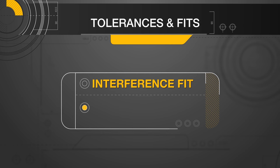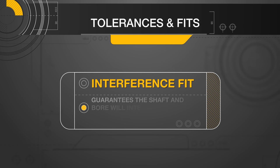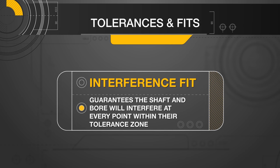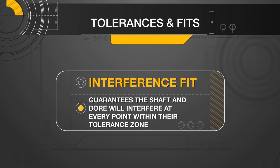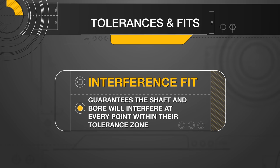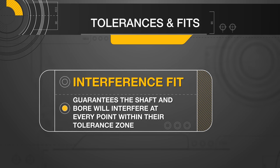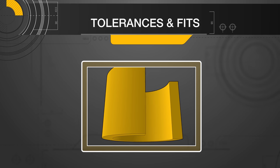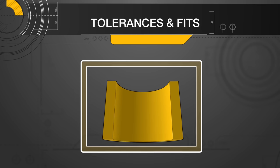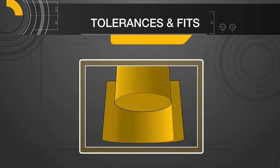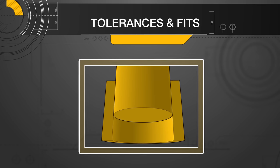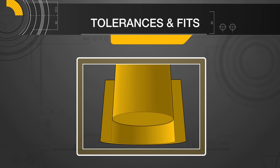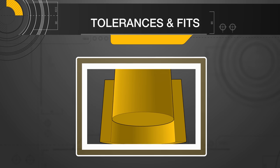An interference fit guarantees the shaft and bore will interfere at every point within their tolerance zone. This is commonly referred to as a press fit. Often the two components must be joined by excessive force or by altering the atmospheric temperature to slightly expand or shrink the diameter for assembly.